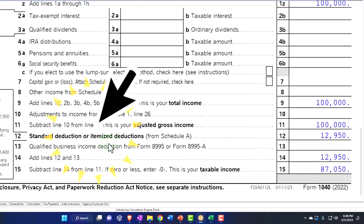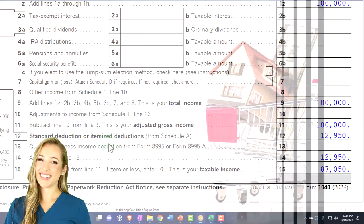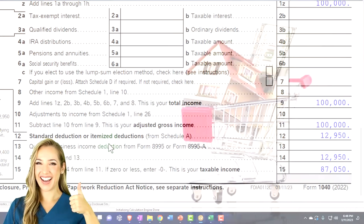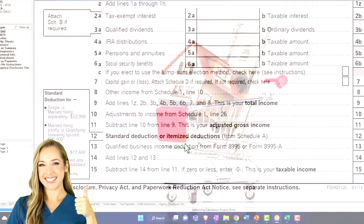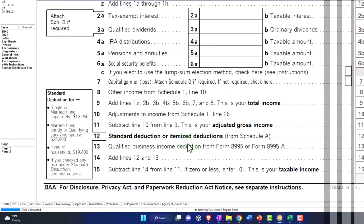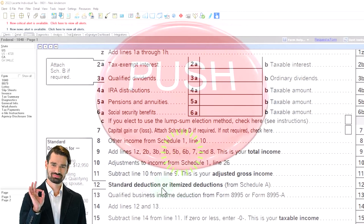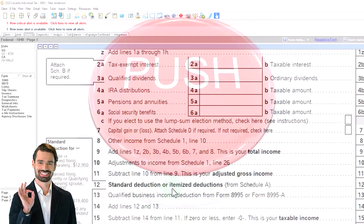We also want to keep in mind the major things that usually help people to clear the standard deduction, that being a home purchase. Oftentimes a home purchase in a fairly high cost of living area where a high mortgage was taken out, because it's the interest and the property taxes on the home that often are the big items pushing people over from taking the standard deduction to the itemized deductions.